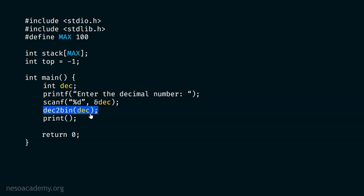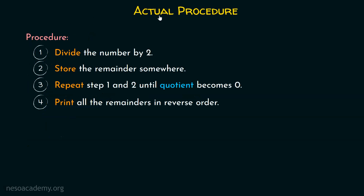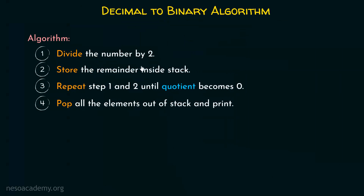Now it's time to write the dec2bin function. We must remember the algorithm: divide the number by 2, store the remainder somewhere, repeat until quotient becomes 0, then print all remainders in reverse order. The key idea is we store remainders inside the stack, and then pop all elements out of the stack and print them — the stack naturally gives us reverse order.